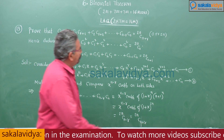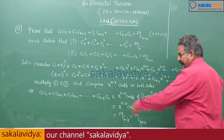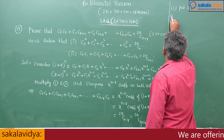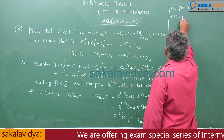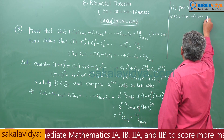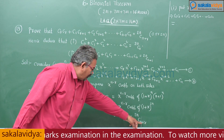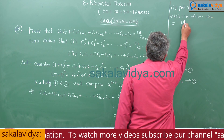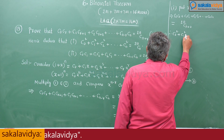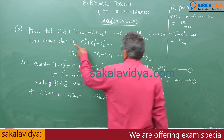Now, for the first deduction, in the above result put r = 0. If you put r = 0, you get C₀·C₀ + C₁·C₁ + C₂·C₂ + ... + Cₙ·Cₙ = 2nCₙ₊₀ = 2nCₙ. Therefore, C₀² + C₁² + ... + Cₙ² = 2nCₙ. The first deduction is proved.